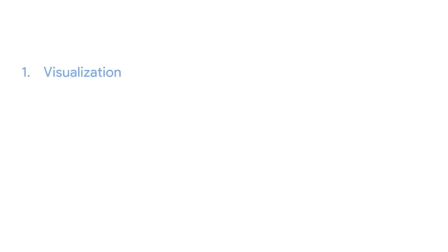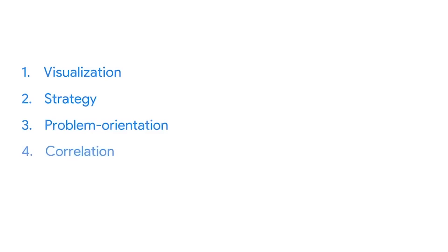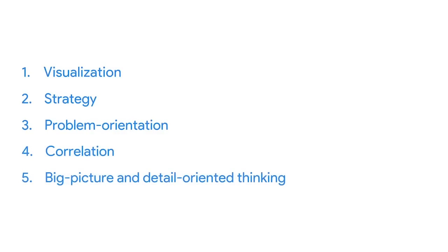The five key aspects of analytical thinking are: visualization, strategy, problem orientation, correlation, and finally, big picture and detail-oriented thinking.